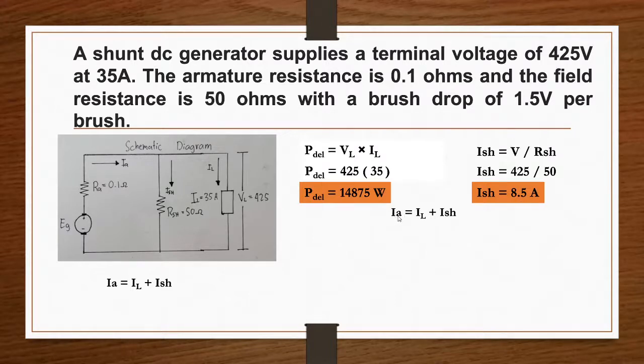Our armature current equals load current plus I_sh. So 35, our load current, plus our shunt current of 8.5, gives us 35 plus 8.5 equals 43.5 ampere. This is our armature current.